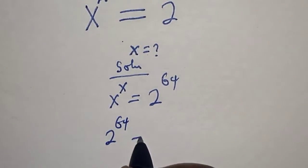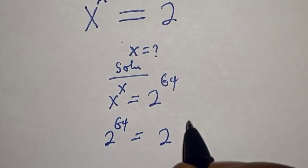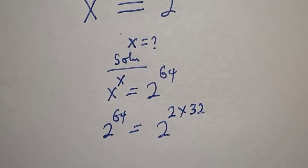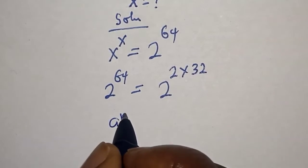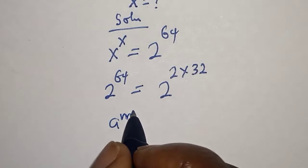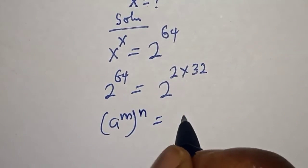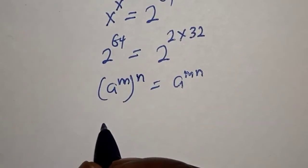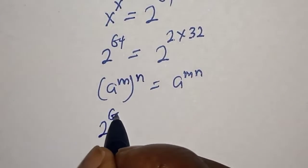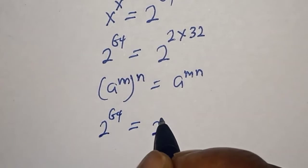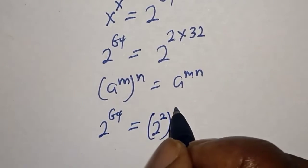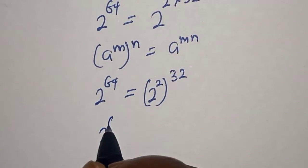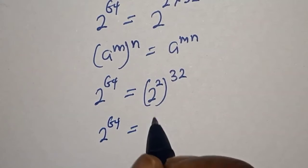Then 2 raised to the power 64 is equal to 2 raised to the power 2 times 32. Take note of this rule: a raised to power m, raised to power n, is equal to a raised to power m times n. So 2 raised to power 64 is equal to 2 raised to power 64.